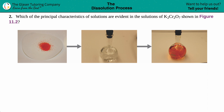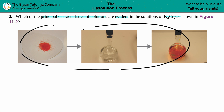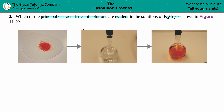Number two: which of the principal characteristics of solutions are evident in the solution of K₂Cr₂O₇ shown in Figure 11.2? We just have to basically run through what the characteristics of a solution are. 'Evident' just means clearly seen, so we want to know which ones can be clearly seen here.